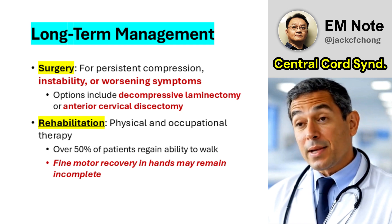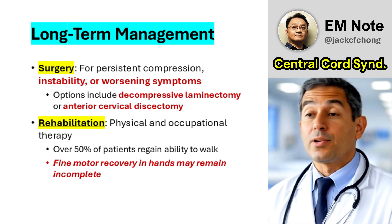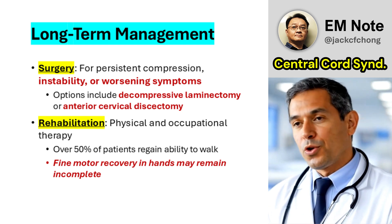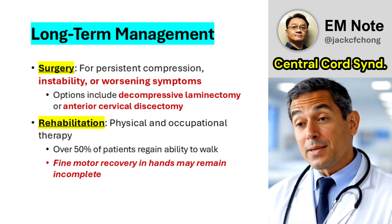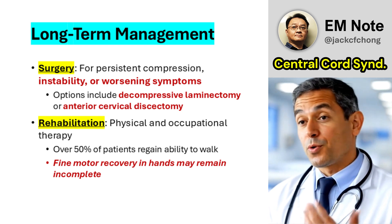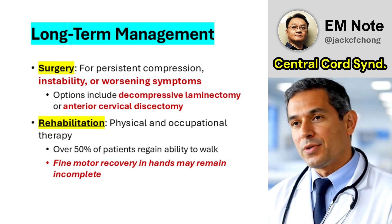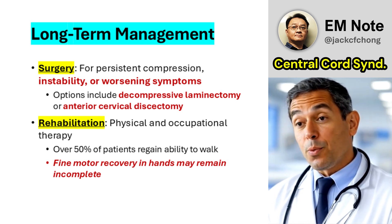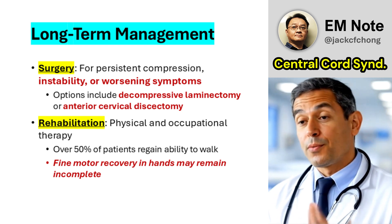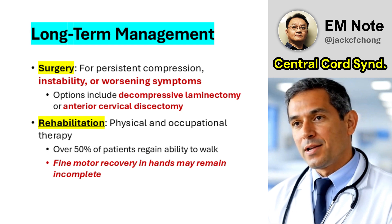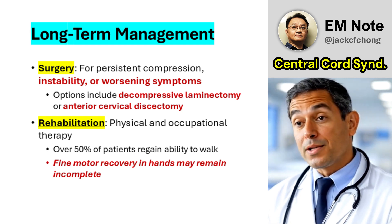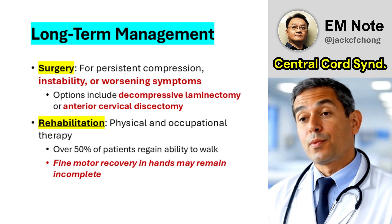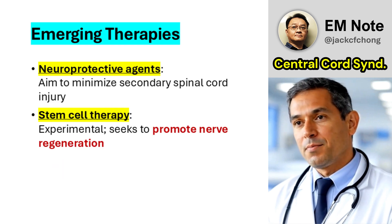Long-term interventions include surgery, indicated for persistent cord compression, instability, or progressive neurological decline. Procedures include decompressive laminectomy or anterior cervical discectomy. Rehabilitation through physical and occupational therapy aims to improve mobility and hand function. Over 50% of patients regain ambulatory capacity, though fine motor deficits often persist.